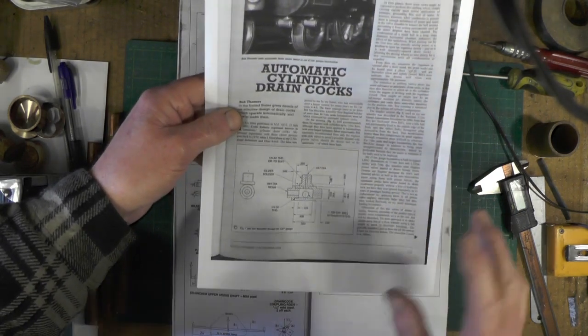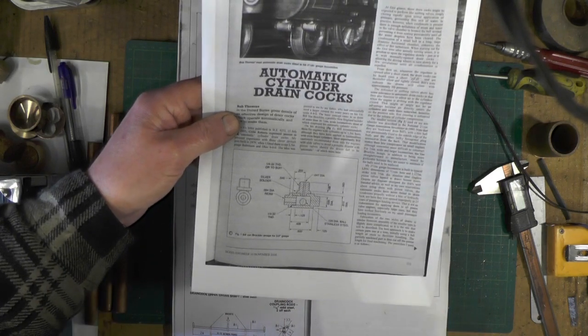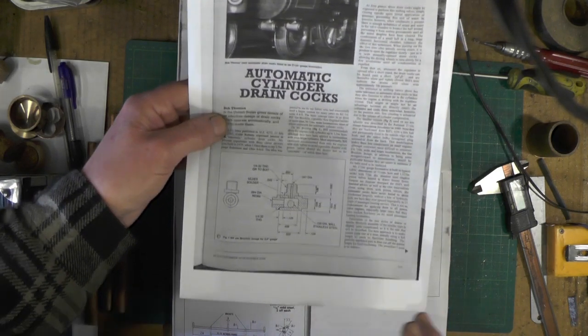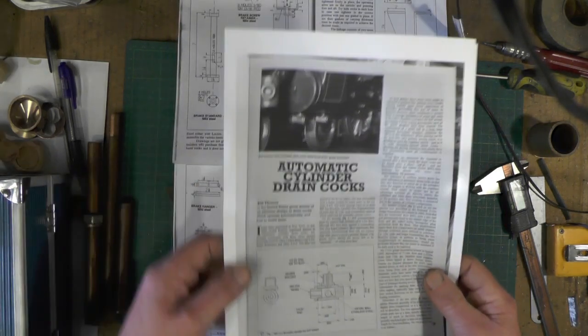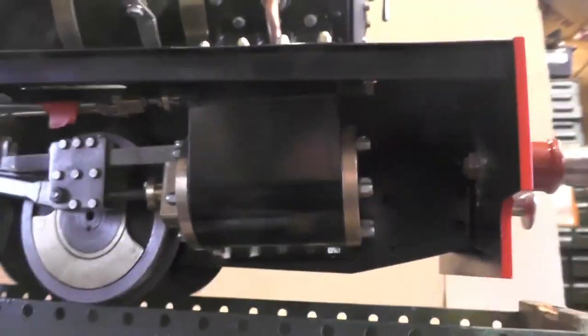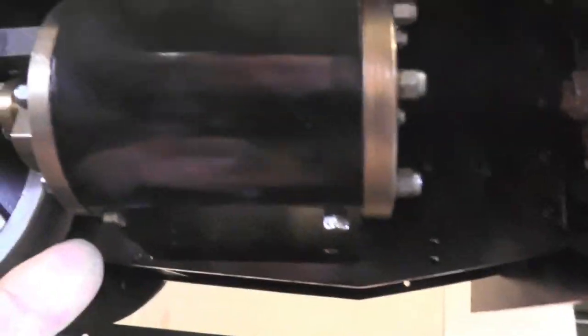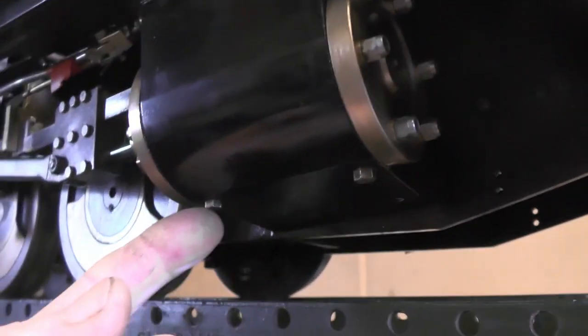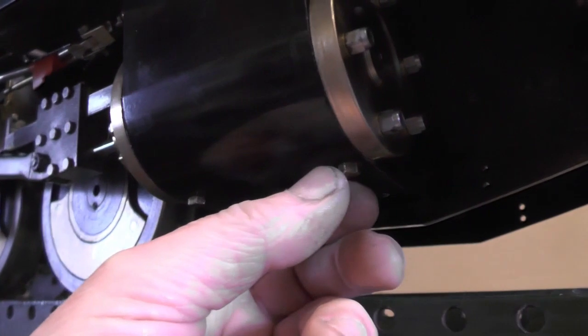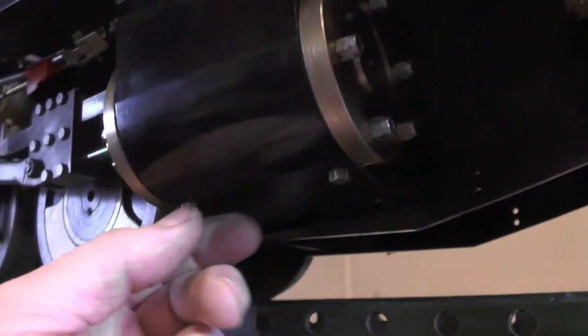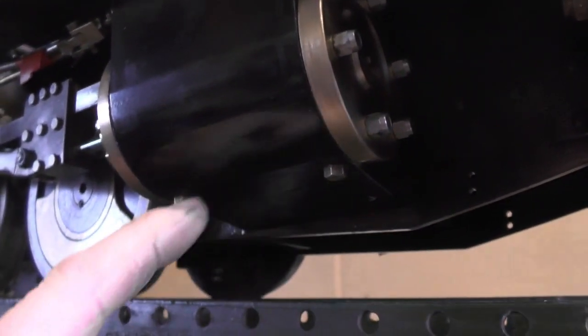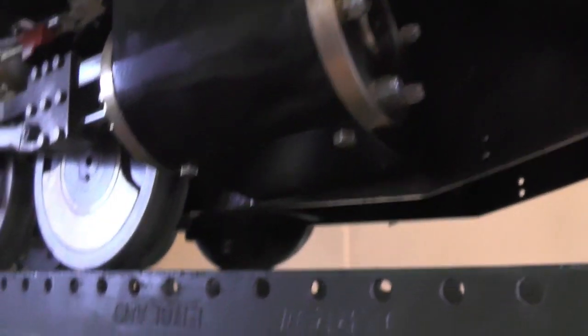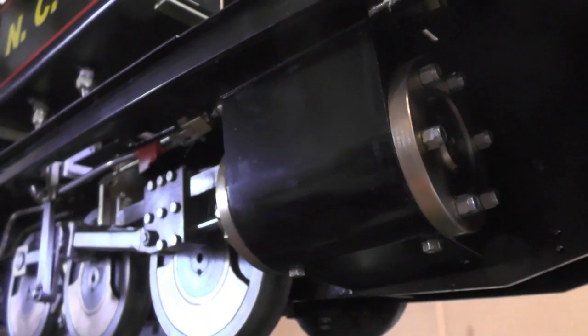Just for anybody that doesn't know where these drain cocks are going to fit, I'll show you on the loco. At the bottom of the cylinder here, at the moment I've got two blanking plugs in. They're 3/16 by 40 thread, so that's where they're going to fit - two on each side.